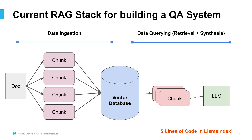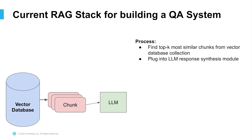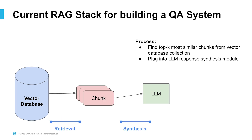Data ingestion is the process of taking your source data and transforming it into a format that you can put into a storage system. Data querying is the process of retrieving that data and having it interact with a language model so you can generate your final response. During data ingestion, we split up a document into even chunks where each chunk is a piece of raw text, generate an embedding for each chunk — for instance, OpenAI embeddings — and then store each chunk into a vector database. During query time, we do retrieval and then synthesis. For retrieval, we find the top-K most similar chunks from the vector database by querying it. We take the retrieved chunks and plug them into the LLM response synthesis module.